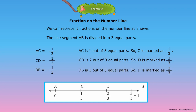Fraction on the number line: we can represent fractions on the number line. The line segment AB is divided into three equal parts. AC is equal to one third, CD is equal to one third, and DB is equal to one third. AC is one out of three equal parts, so C is marked as one third. AD is two out of three equal parts, so D is marked as two thirds. AB is three out of three equal parts, so B is marked as three thirds, which equals one.